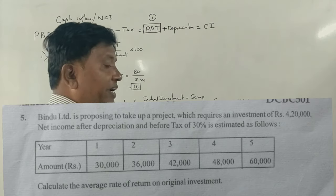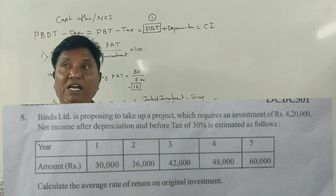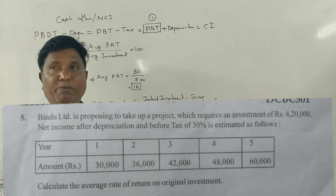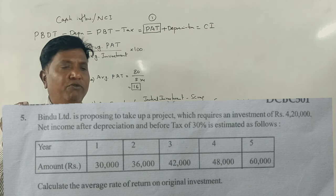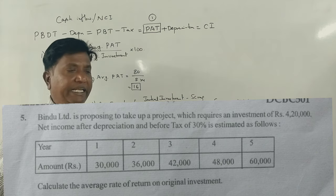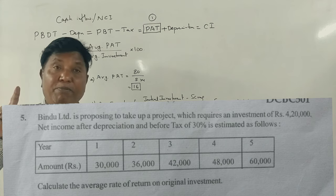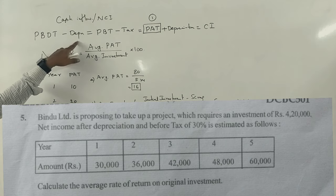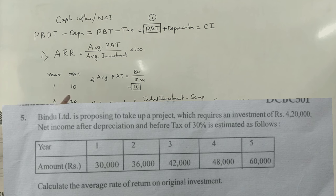Now, a 2024 NEP syllabus question — five marks. Bindu Limited is proposing to take up a project requiring an investment of Rs. 4,20,000. Net income after depreciation and before tax (PBT) over 5 years: Rs. 30,000; 36,000; 42,000; 48,000; 60,000. Tax rate: 30%. Calculate the average rate of return on original investment.